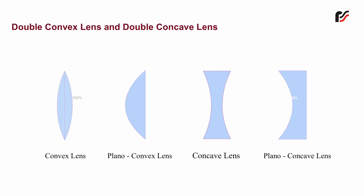The lens whose one surface is plane while the other surface is convex is called a plano-convex lens.